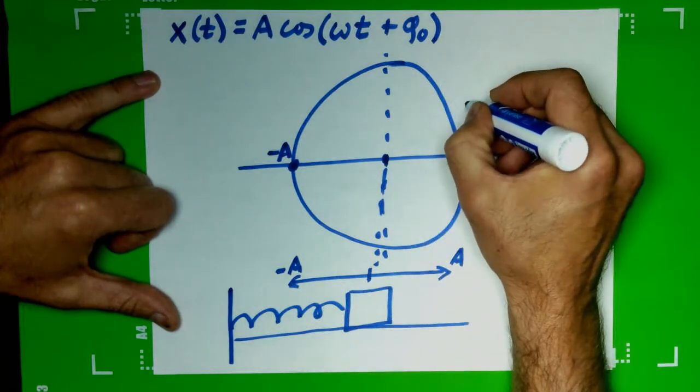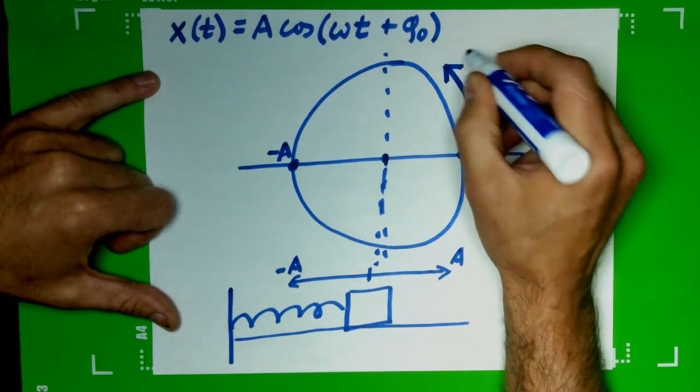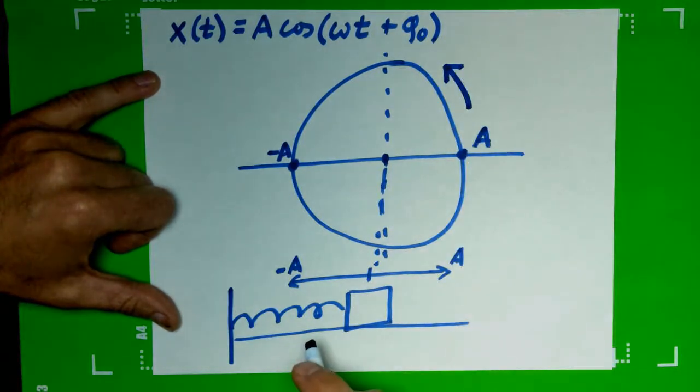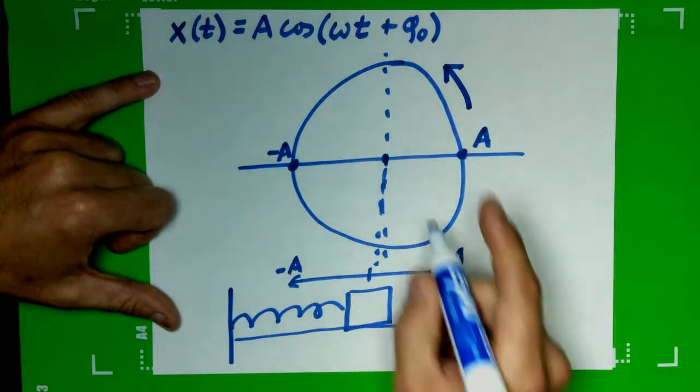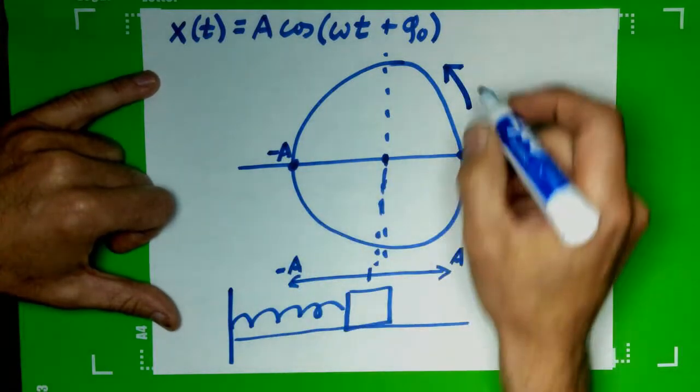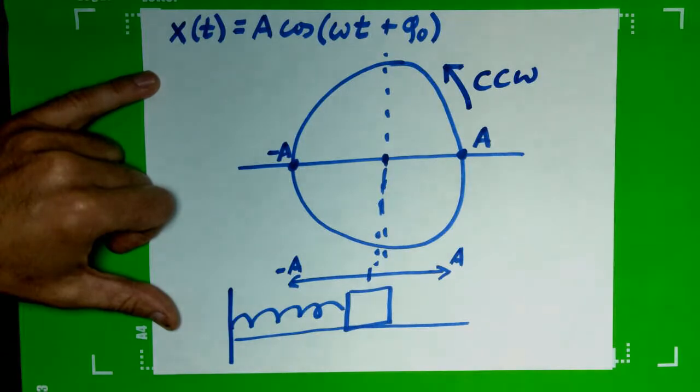So on our circle, we always assume the motion is going counterclockwise. We have counterclockwise motion all the time.